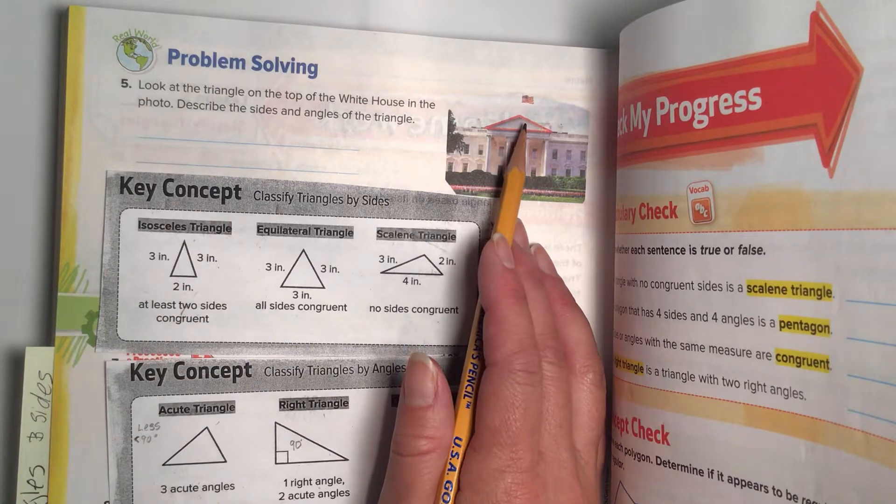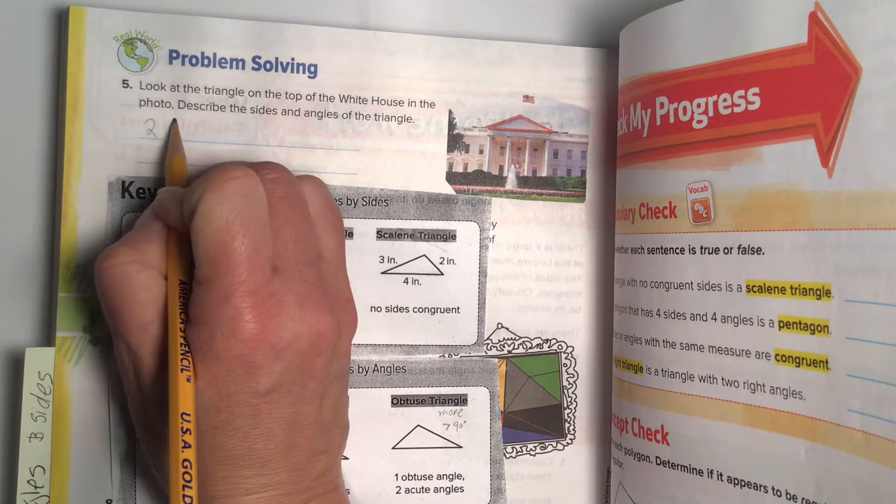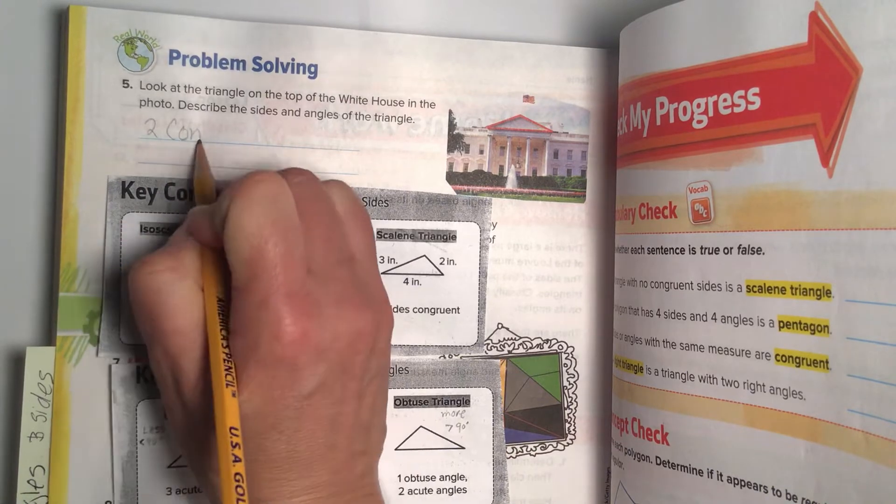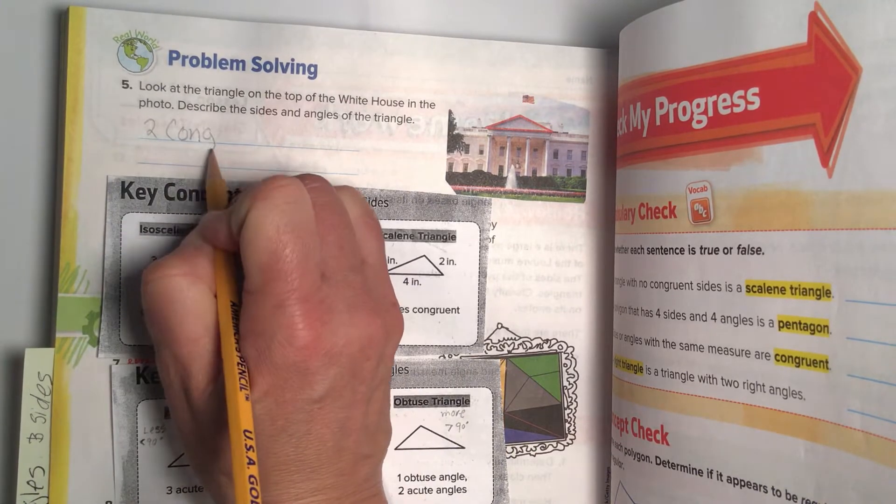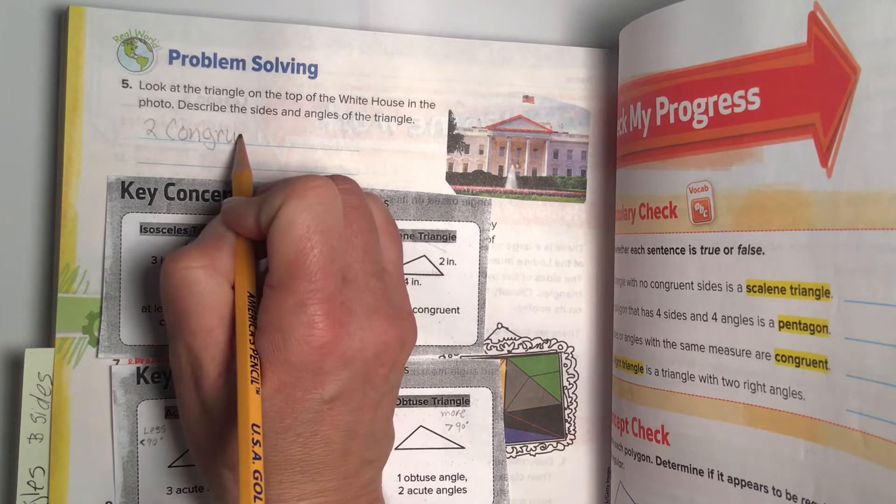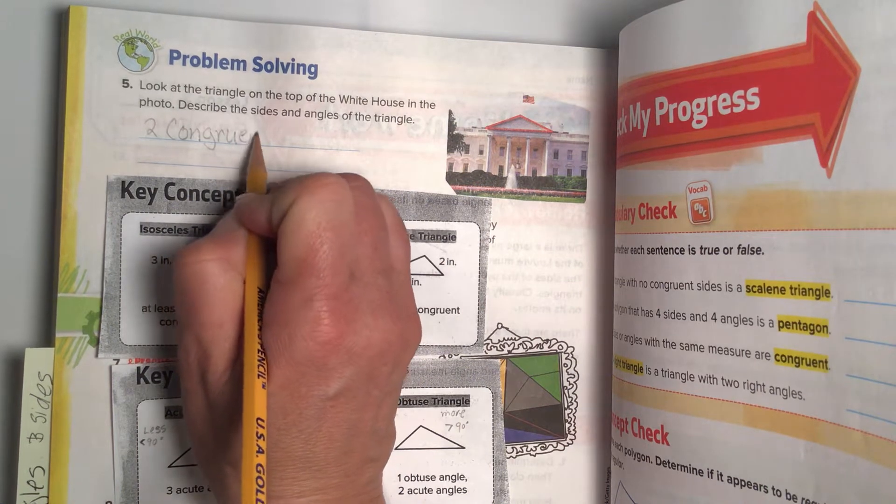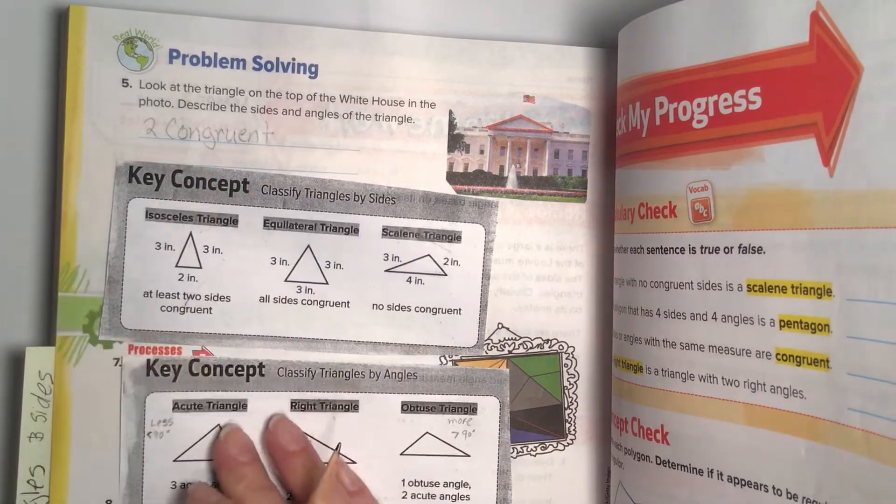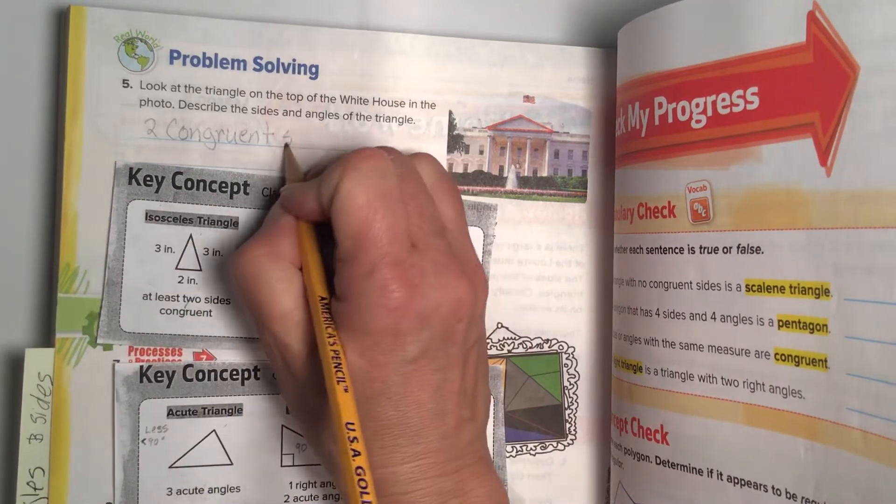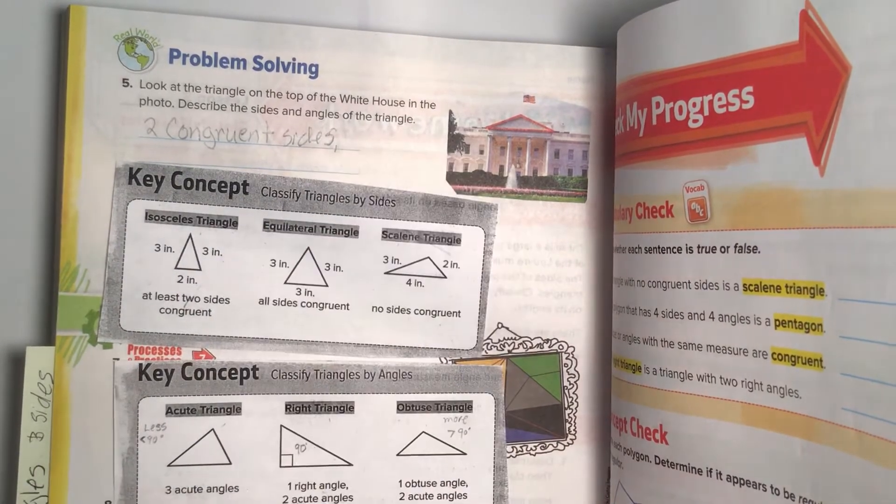That one's really long and those ones look like they're similar. So I'd say it has at least two congruent sides. So we're gonna say two congruent, and we spell Gru, our famous friend from Minions. G-R-U. And I always forget what comes next. E-N-T. Two congruent sides.